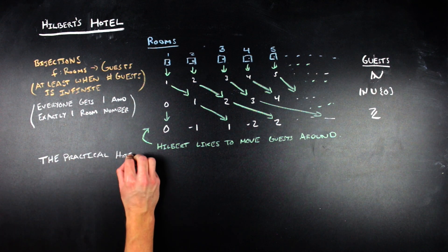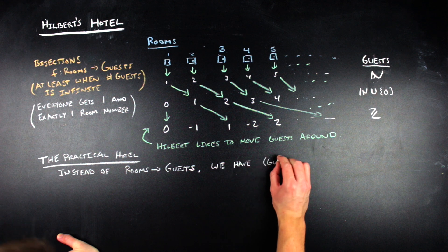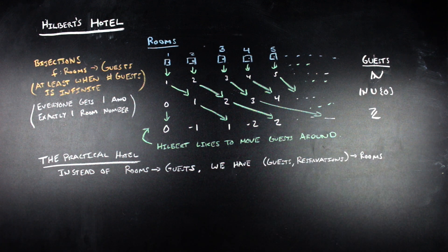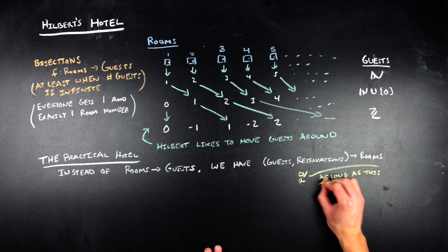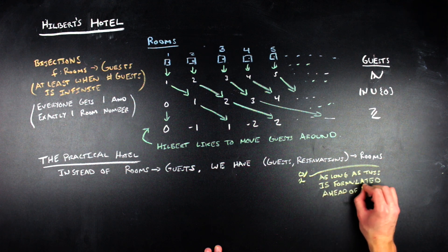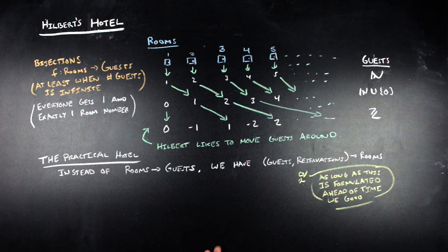The practical person is letting people stay in their rooms for their entire stay, while Hilbert moves people around all the time. You might think that the practical person has eliminated the fun of Hilbert's hotel and won't be able to fit everyone. The way to address this is to say that the practical hotel runs off of reservations. As long as the person running the practical hotel knows ahead of time who is coming, they will be able to order things in such a way that they will be able to fit the same amount of guests as Hilbert's hotel does.